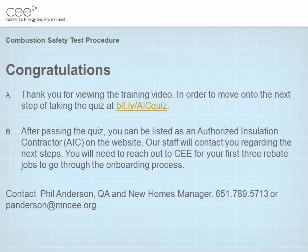In order to move on to the next step of taking the quiz, go to the provided website. After passing the quiz, you can be listed as an authorized installation contractor on the website. Our staff will contact you regarding the next steps. You will need to reach out to CEE for your first three rebate jobs to go through the onboarding process. Contact Phil Anderson, QA and New Homes Manager, at 651-789-5713 or at panderson@mncee.org. Thank you.